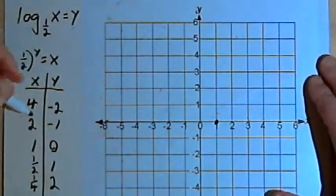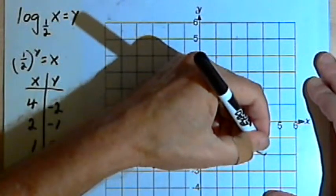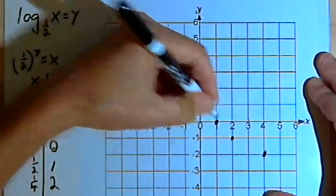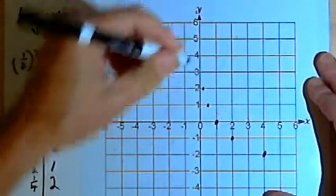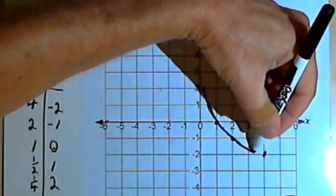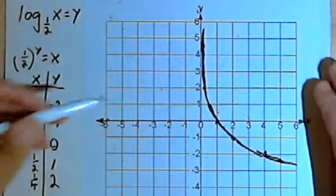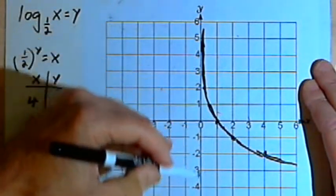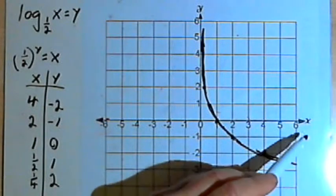Let's plot these points: (4, -2), (2, -1), (1, 0) on the x-axis, (1/2, 1), and (1/4, 2). Connecting those points gives a curve that also has a vertical asymptote at x equals 0, right along the y-axis. This curve is decreasing — it gets more and more negative as x increases.